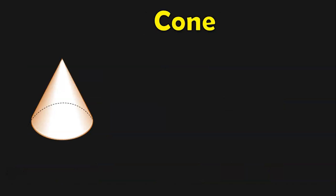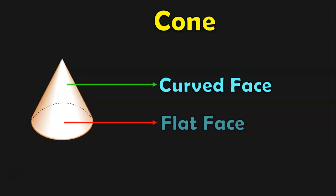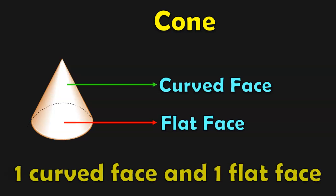Shall we see another example? This is a cone. The bottom of a cone is a flat face, and the top portion is a curved face. So how many faces does a cone have? It has two faces. One is a curved face and another is a flat face.